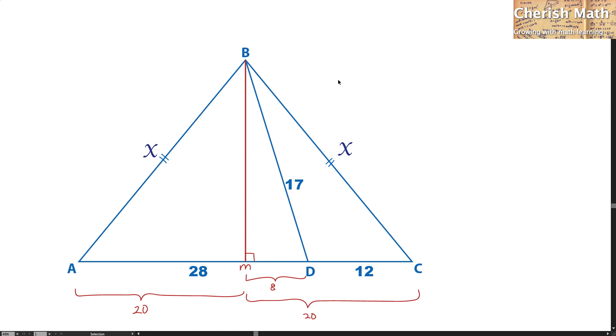To find out what is the length of BM, I'm going to use Pythagorean theorem. That is by using the square root of 17 squared minus 8 squared. The length that I'm getting here is 15 for BM.